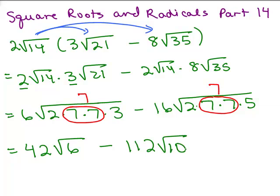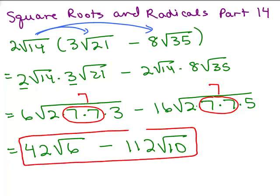Can we combine those any further? This has a square root of 6 and the second one has a square root of 10, so they're not alike — I can't combine any further, and that's as far as we could go.